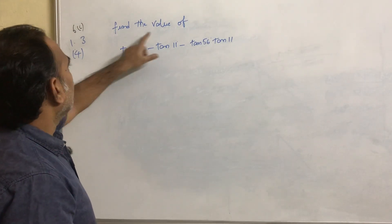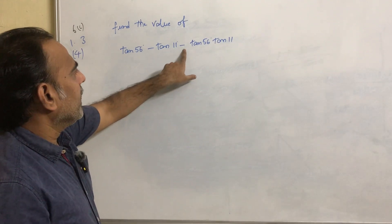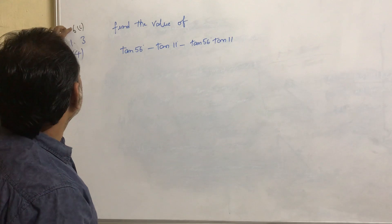Our next problem is find the value of tan 56° - tan 11° - tan 56° into tan 11°.